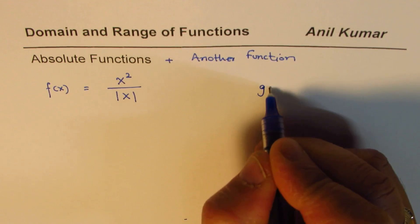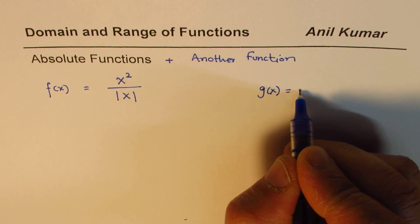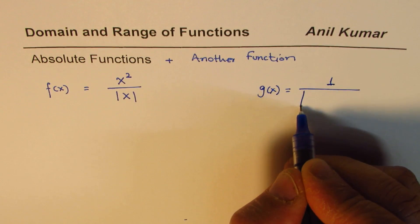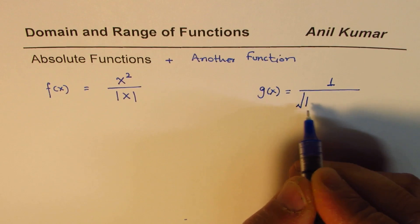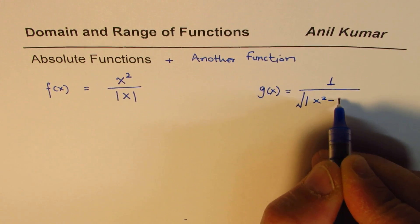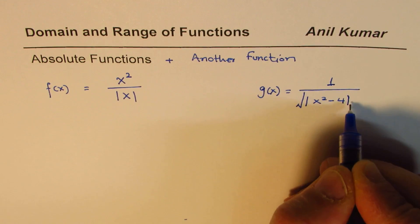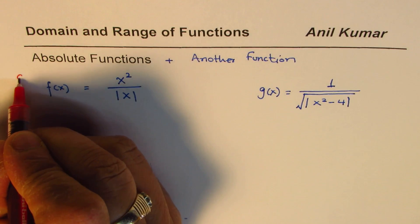Another example I want to take in this video is to find the domain and range of 1 over the square root of an absolute function — specifically, absolute value of x squared minus 4. So these are the two examples I'm going to consider in this video.